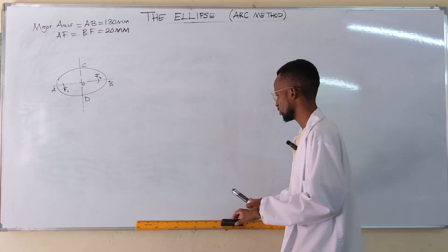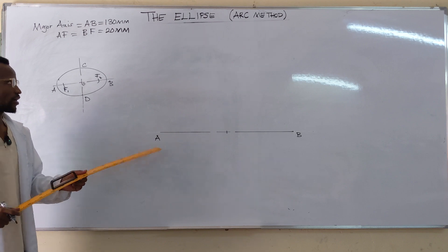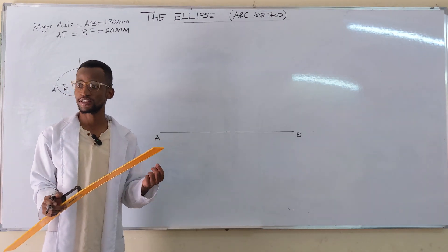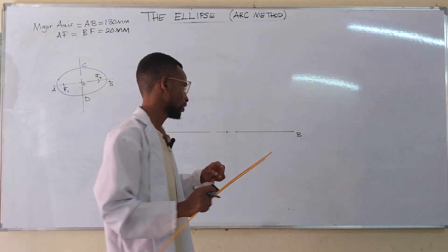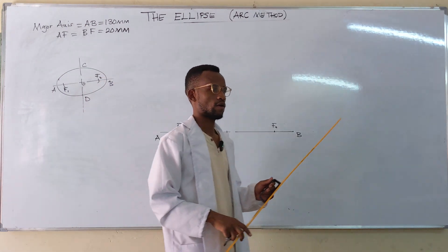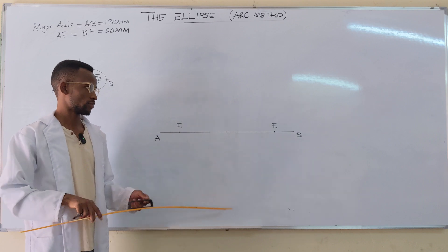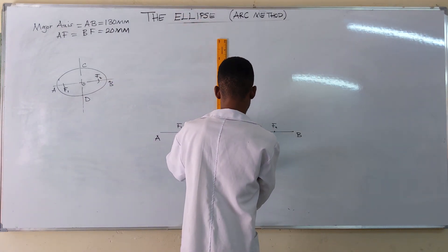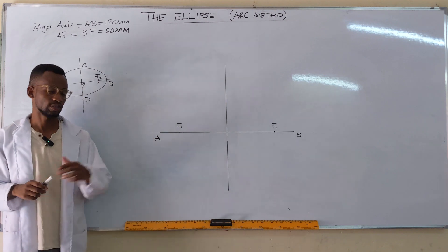We draw a line 130 millimeters long to represent the major axis, then locate focal points F1 and F2 on this line. We also draw a perpendicular line through the center of the major axis to represent the minor axis, though we won't mark its measurements — just a line meeting at 90 degrees with the major axis.